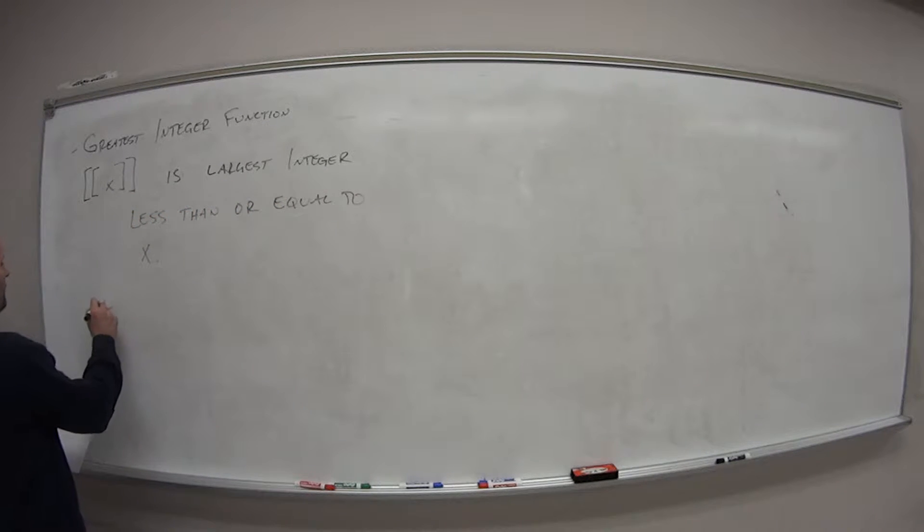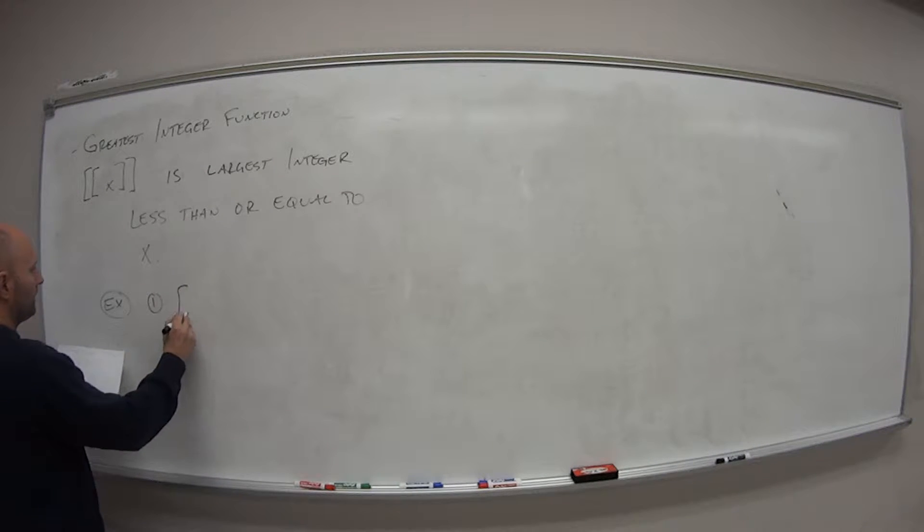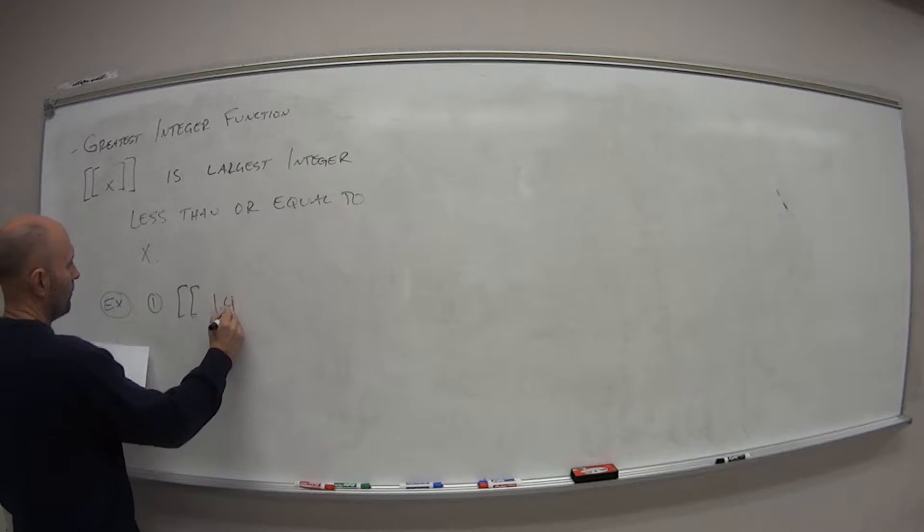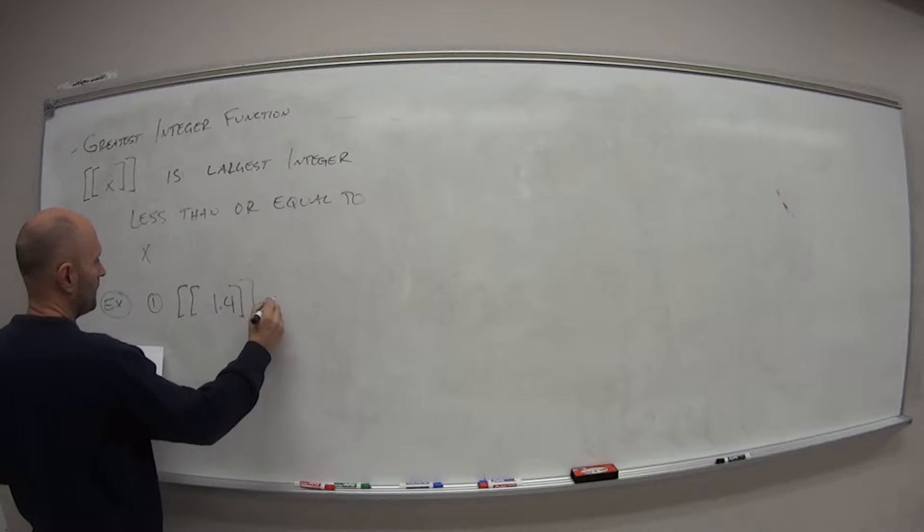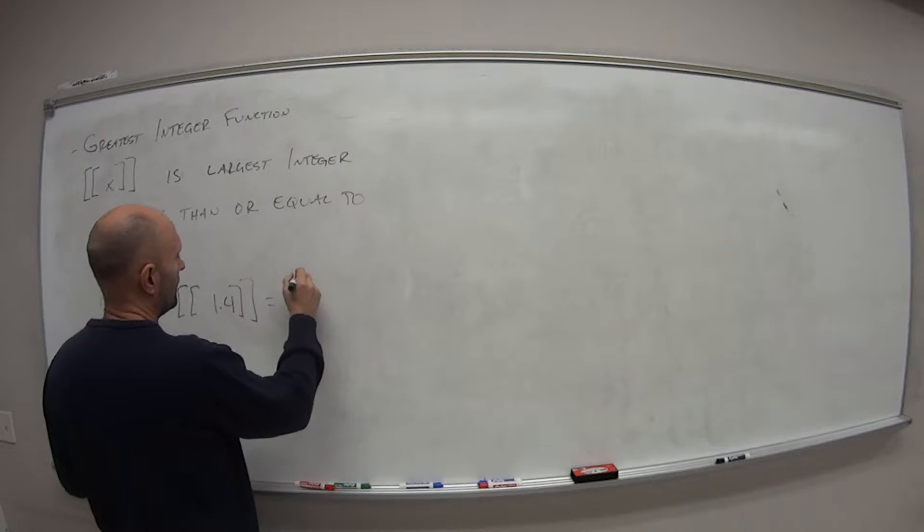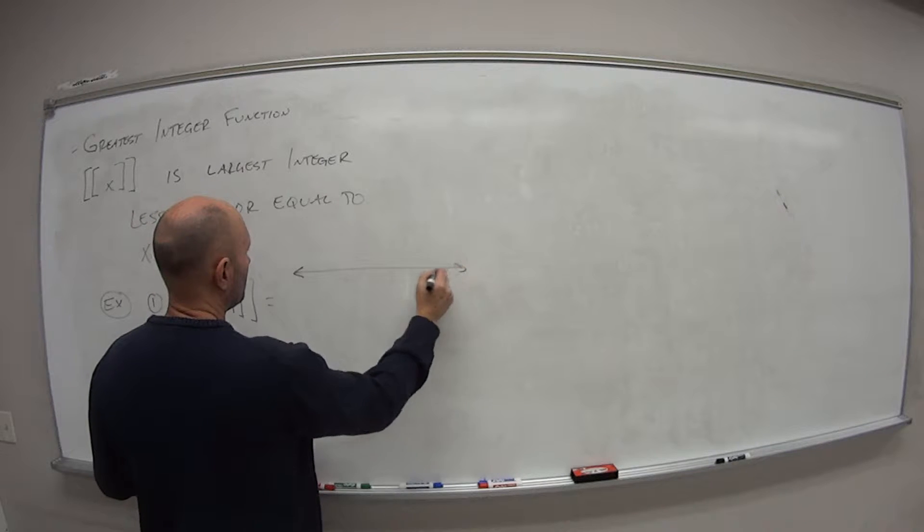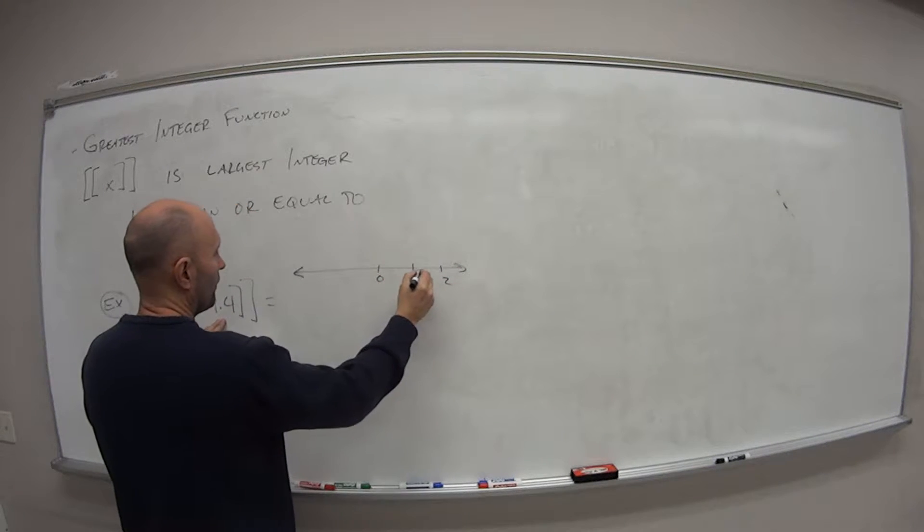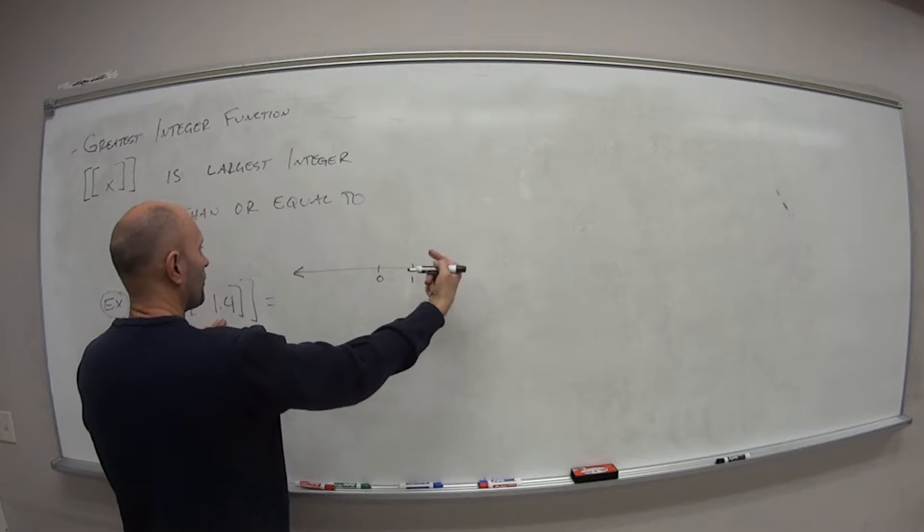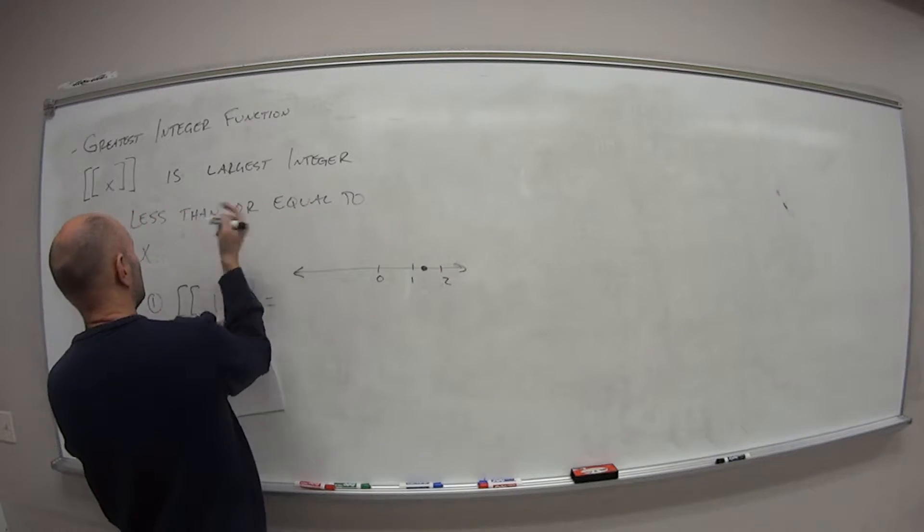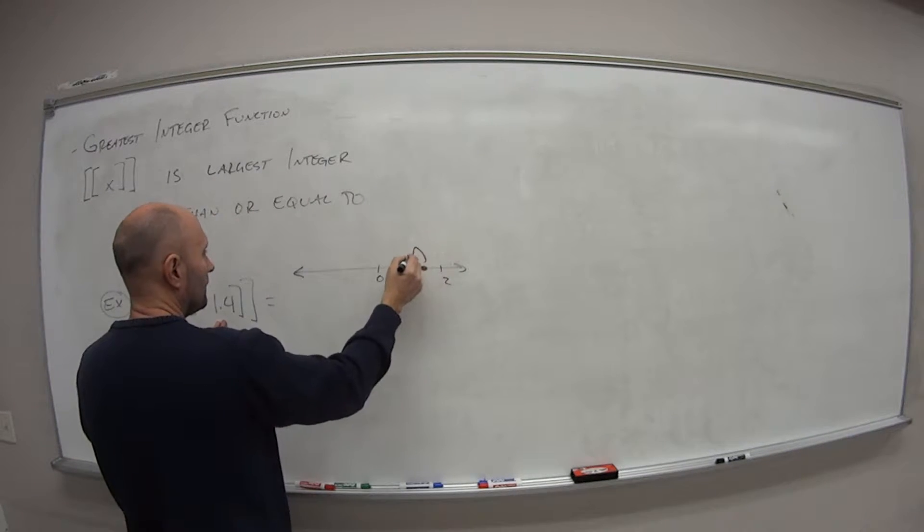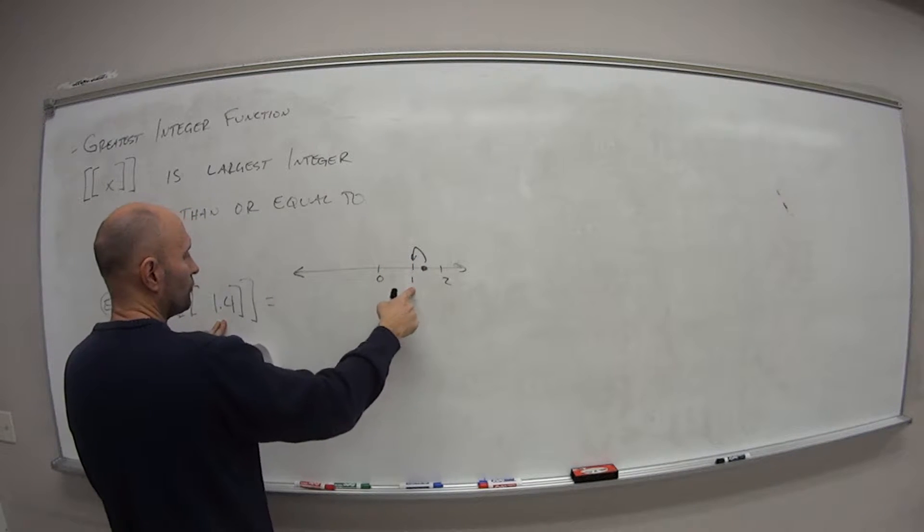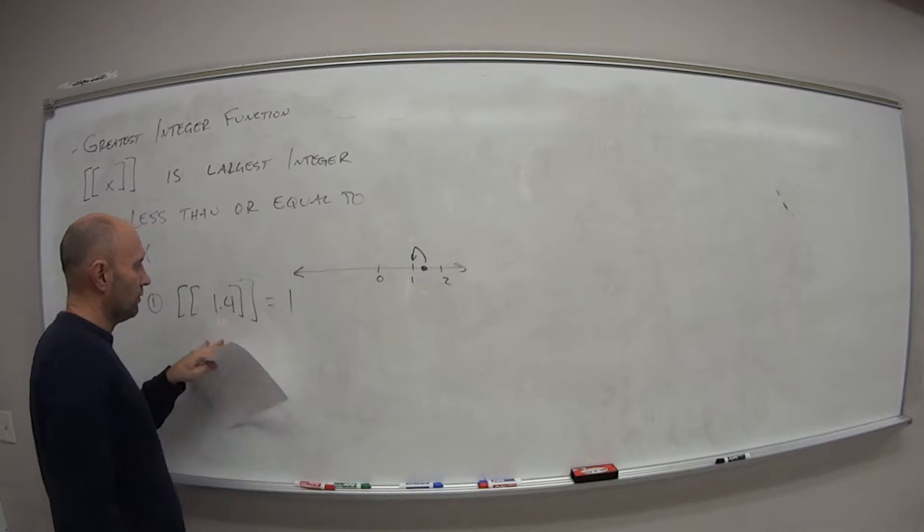So for example, if I have the greatest integer of 1.4, this is equal to what? Well, again, if I draw a number line, 1.4 is about here. So I go to the left, the largest integer less than or equal to that, and the integer right to the left of it is equal to 1.